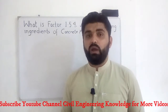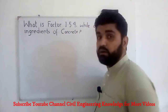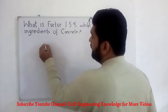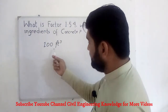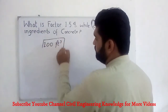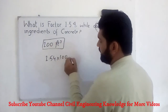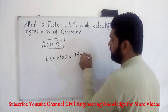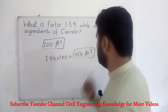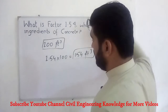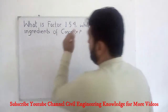We multiply the quantity or volume of concrete with 1.54 while calculating the ingredients of concrete. For example, if anyone asks you to calculate the quantity of ingredients of concrete for 100 cubic feet, we do not use that volume directly. We multiply 1.54 by 100, which gives 154 cubic feet, and then we calculate the ingredients of concrete for this value of 154 cubic feet.